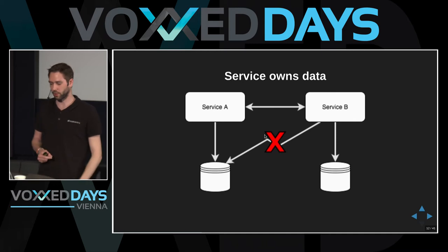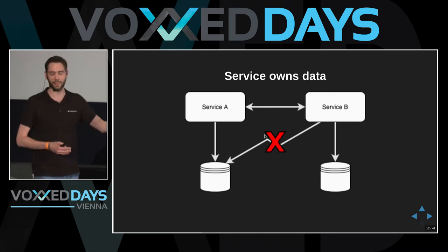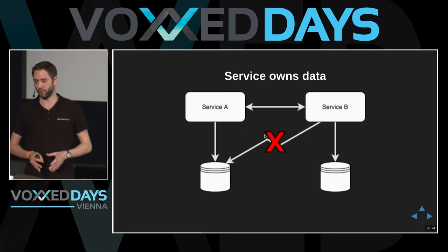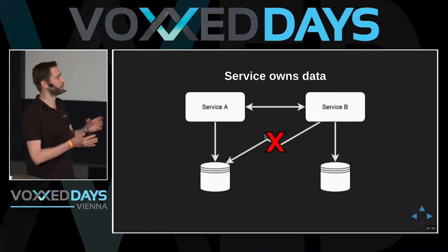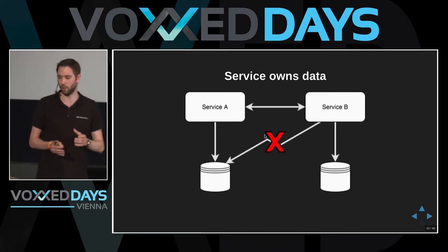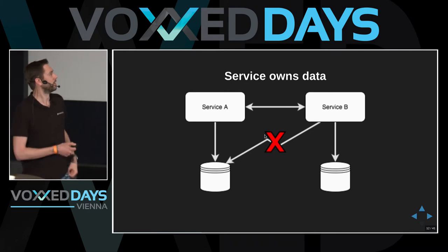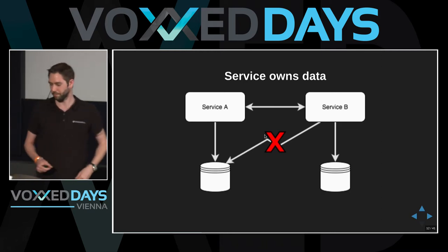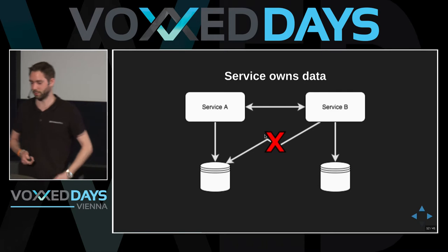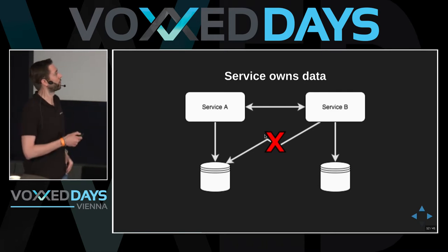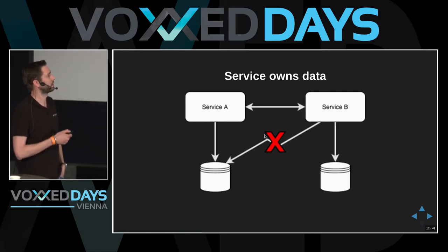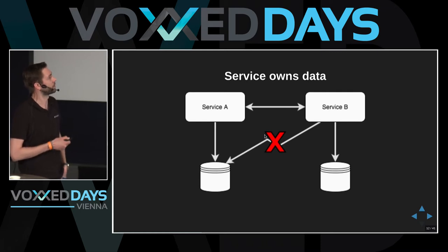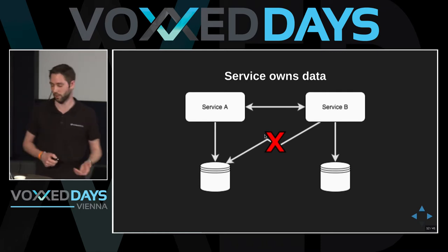A very important concept — which I misused a little bit in my demo — is that a service should be tied to one bounded context and should own its data. So service B going directly to service A's tables is a big no-no. Every service should own its data and only access it directly. When service B needs something from service A, use the APIs and not go to the database.